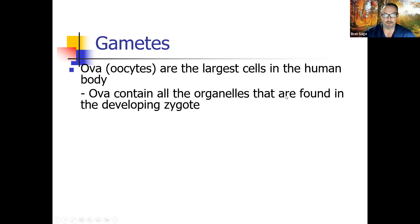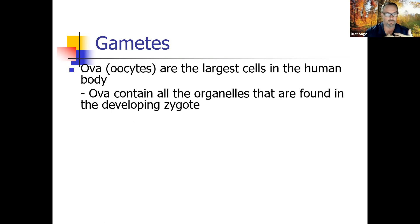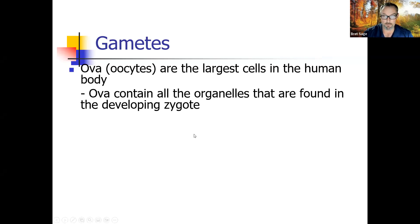The ovum contains all the organelles found in the developing zygote. All those organelles — mitochondria, Golgi bodies — are copies of your mom's. The only thing you got from your dad was chromosomes. So all organelles in the developing zygote come from mom's cells because dad's sperm only delivers chromosomes, no organelles.